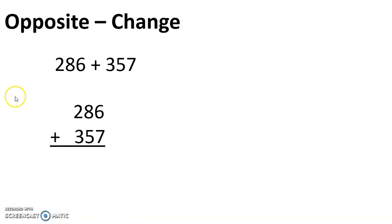So for the example here, the 286 plus the 357, let's first align them vertically.